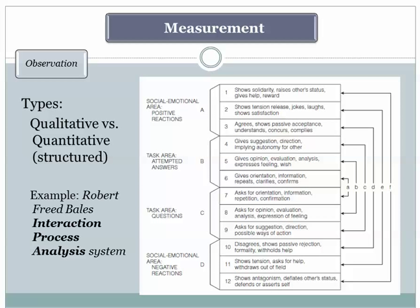Observation is sometimes structured rather than generally qualitative. One example of such a structuring system is Robert Freed Bales' Interaction Process Analysis, or IPA. After years of analyzing group process, Bales came up with twelve categories of very prominent sorts of behaviors typically observed in groups, organized into positive socio-emotional areas, positive task areas, task areas involving questions, and more negative socio-emotional areas. The observer notes the frequency of these behaviors when they occur. He subsequently revised this model into his SYMLOG approach — Systematic Multiple-Level Observation of Groups — which has 26 categories of behaviors rather than 12.